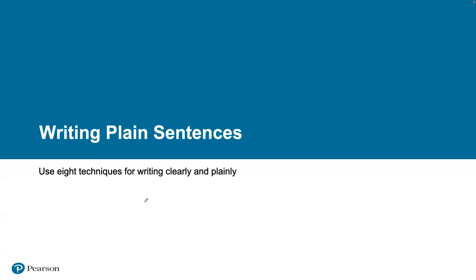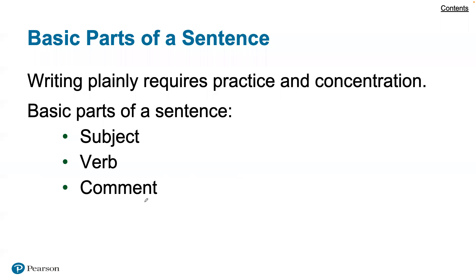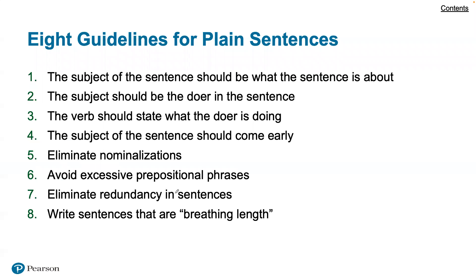When writing plain sentences, we'll use a handful of techniques for writing clearly and plainly. The basic parts of a sentence are the subject, the verb, and the complement. The subject is what the sentence is about, the verb is what the subject is doing, and the complement is what is being said about the subject. The subject should be the doer in the sentence — taking some type of action — and the verb should state what the doer is doing.